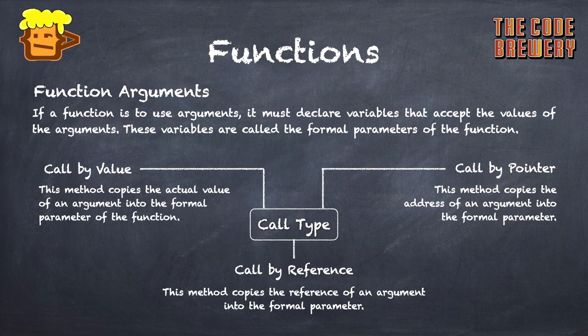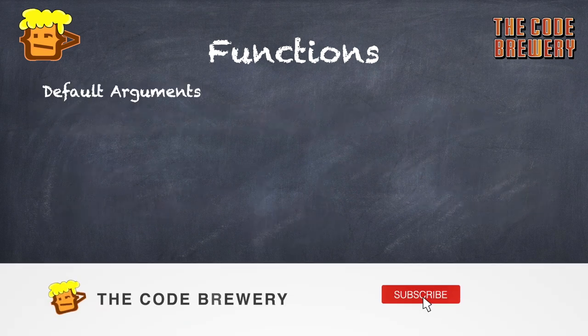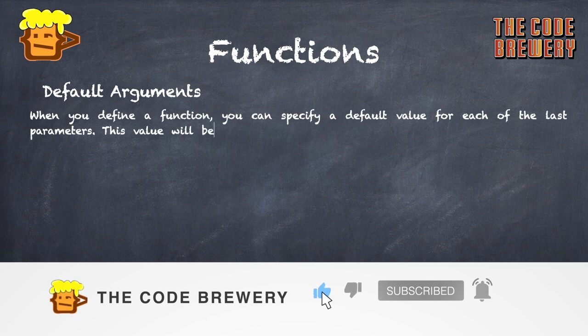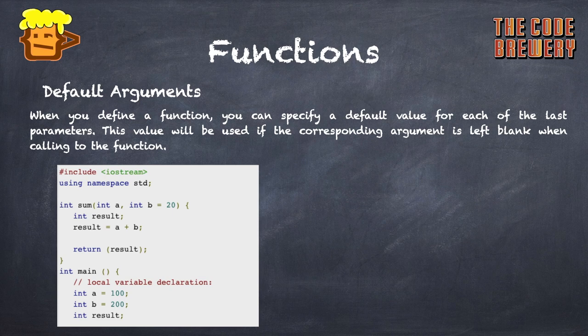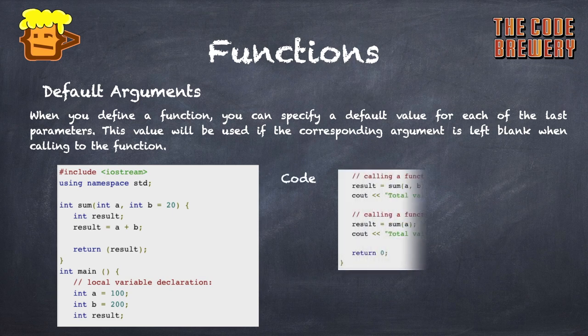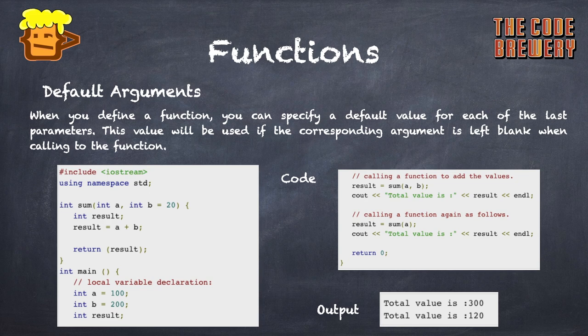If we come to about default arguments, this is also an important point in functions. When you define a function, you can specify a default value for each of the last parameters. That means the parameter which would be the most rightmost has to be defined with a value. You can't define the leftmost and not define a value for the rightmost; it would be a wrong protocol.